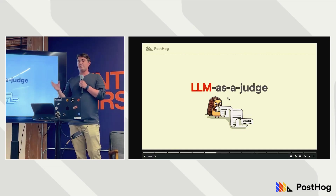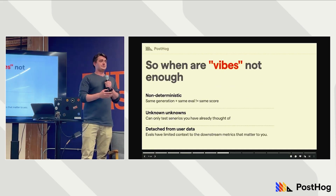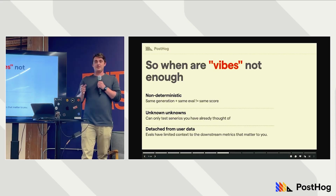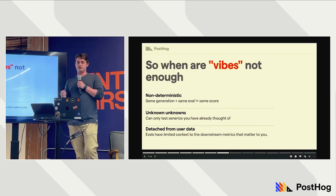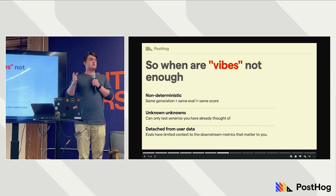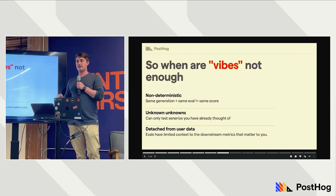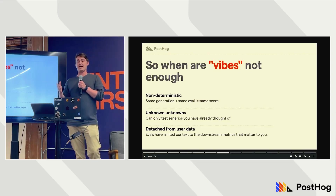It tells you directionally if you're getting better or worse, but it falls down in some key ways. It's non-deterministic — given the same input, output, and eval, you can get different scores. Techniques like GEVAL or DAG make this more consistent, but it's still non-deterministic. It also doesn't help us with unknown unknowns. The common joke: a QA walks into a bar, orders one beer, 10 beers, 100 beers, signs off — all good. First customer asks for water and where the toilet was, and the whole place collapses. If you don't know what to test, you can't tell how your application is doing on it.